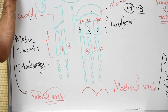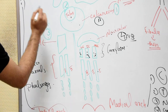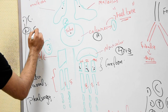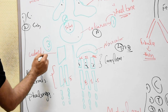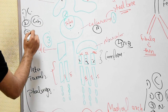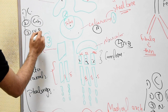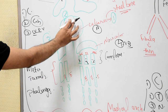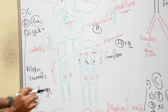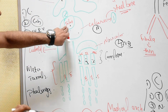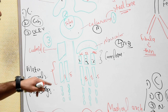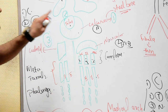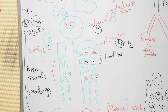In the lateral arch, remember, there is no talus. The lateral arch includes the calcaneus, the cuboid, and the fourth and fifth metatarsals. So the talus is only part of the medial arch, where it acts as the key bone.